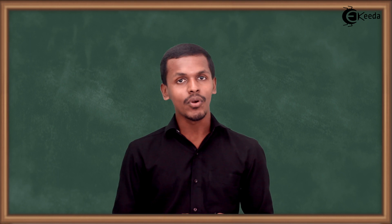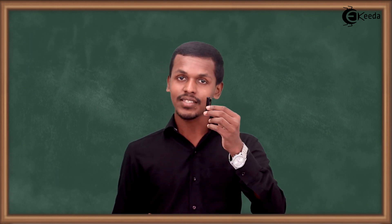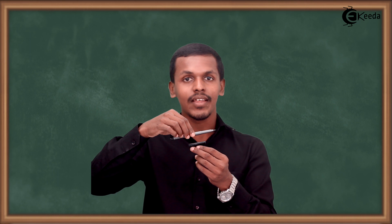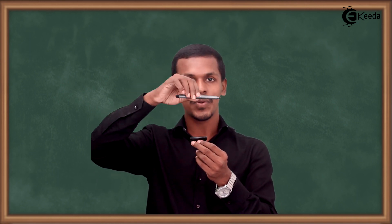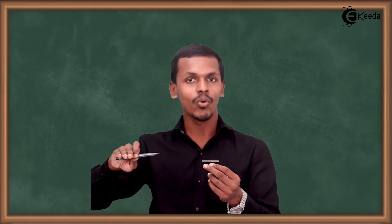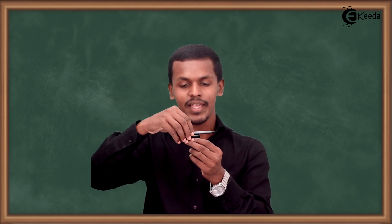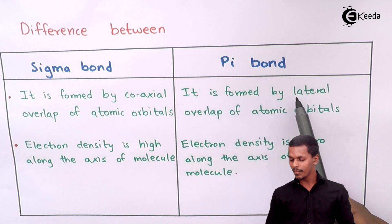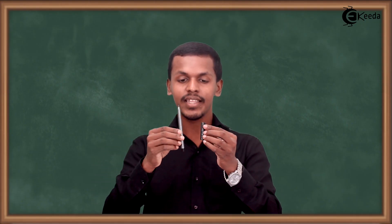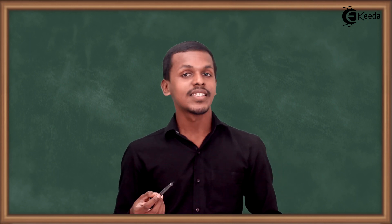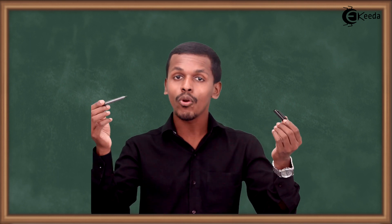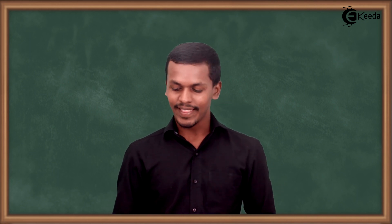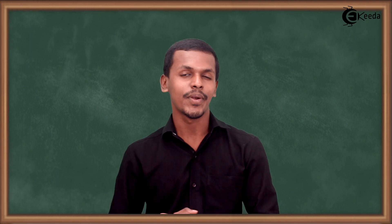Talking about the pi bond: suppose this is in the y-axis, or suppose one is in the x-axis and another is also nominally in the x-axis, but they are not overlapping along the same axis — one is on a lower axis while the other is on an upper axis. So they combine in this lateral manner and that is why the pi bond is formed. Sigma bond always involves a head-on collision, also known as coaxial overlapping. That is why sigma bonds are stronger compared to pi bonds.